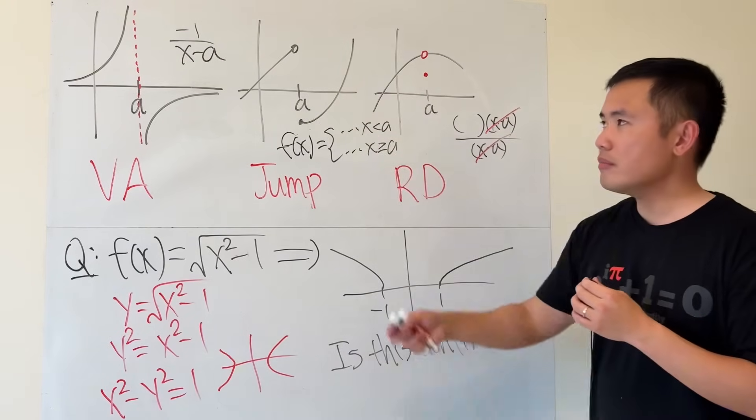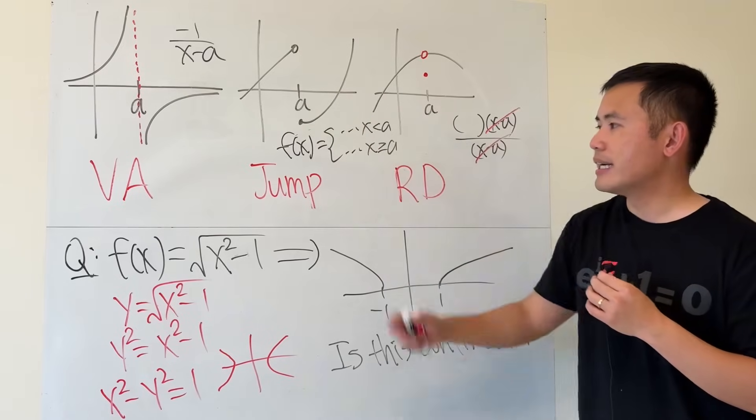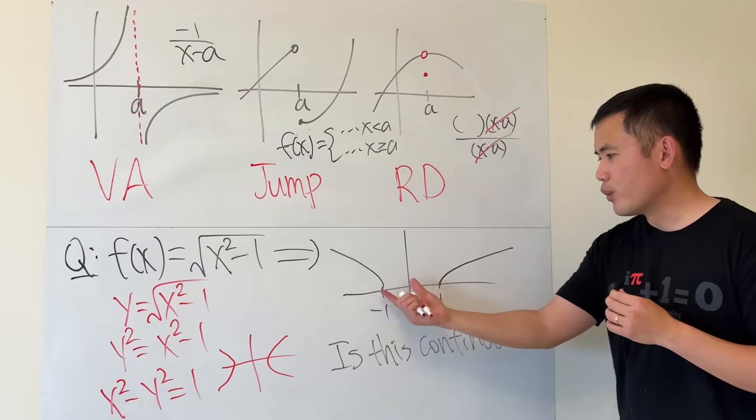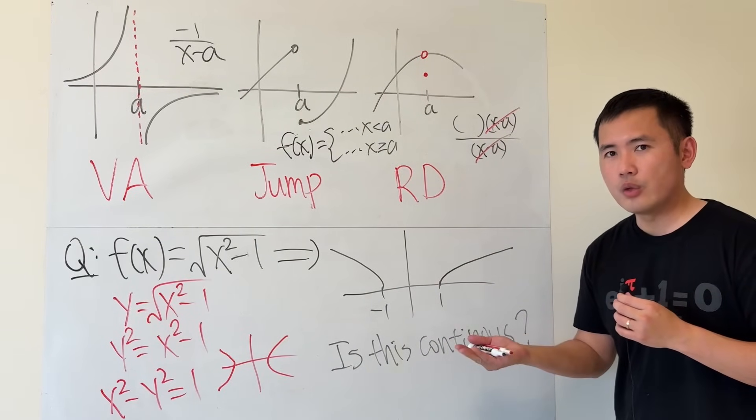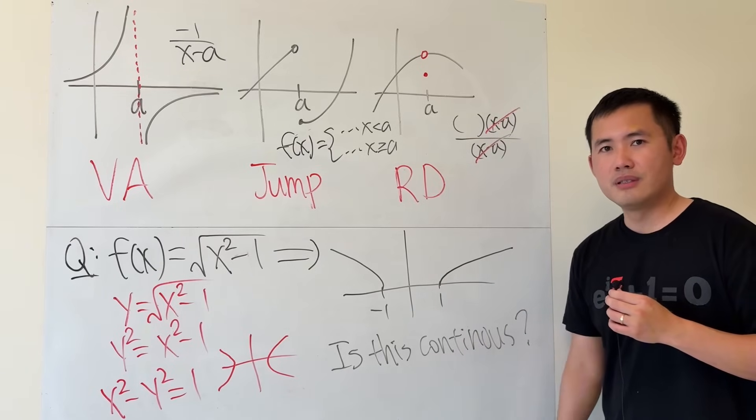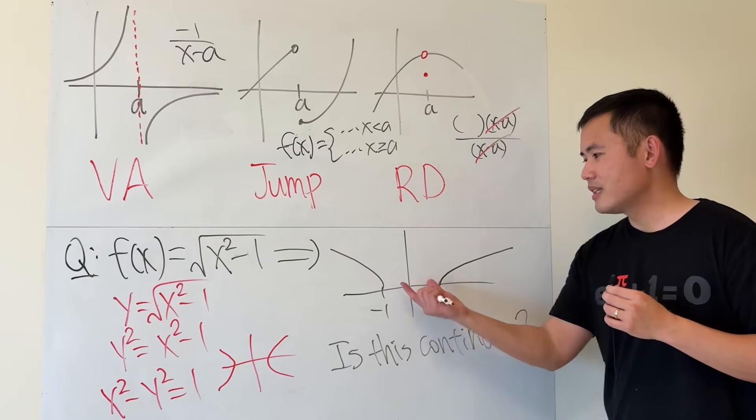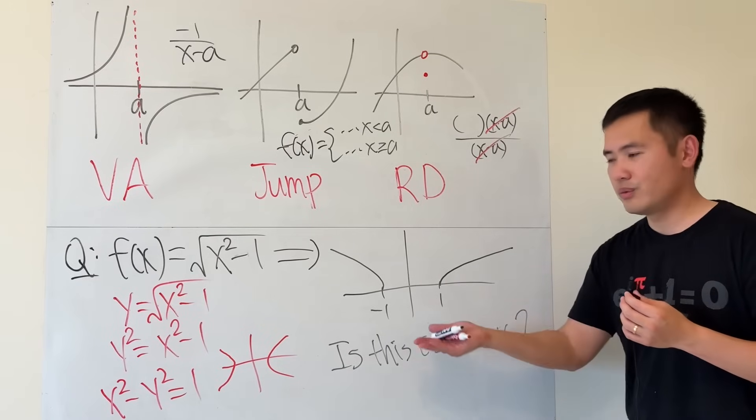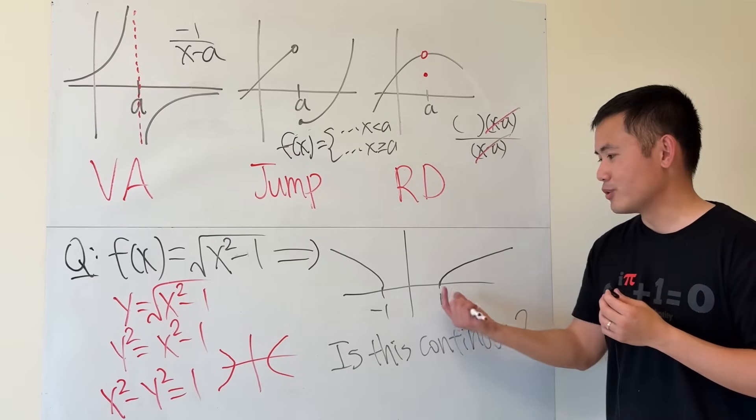Such as this and that. Right? It's not connected. So we call that not continuous. Then of course, we will say this right here, it's also not continuous. But how would you describe this? The function is not continuous. Because how do you describe that? A horizontal jump?